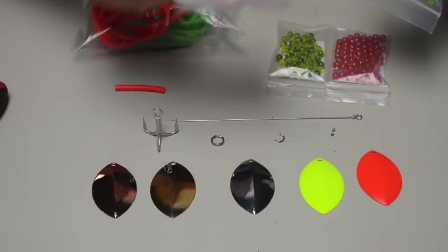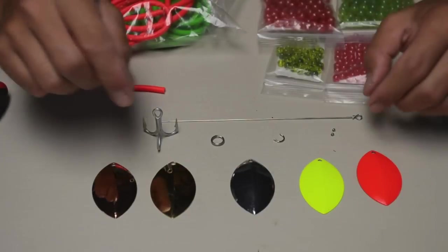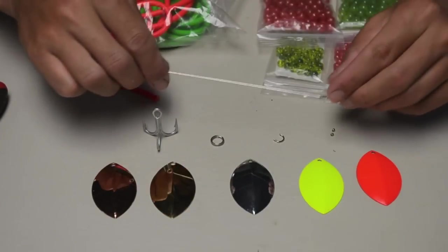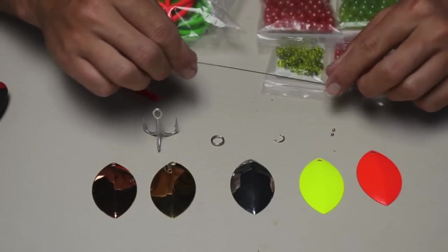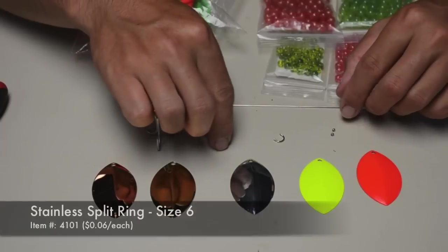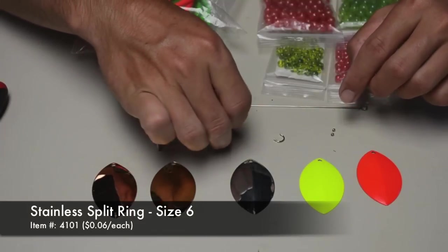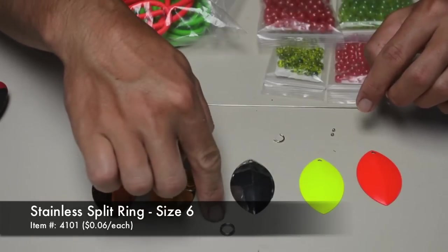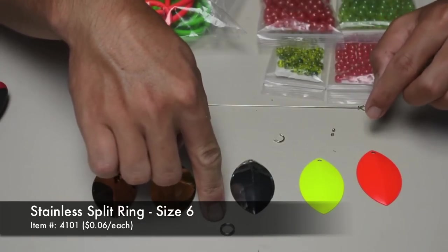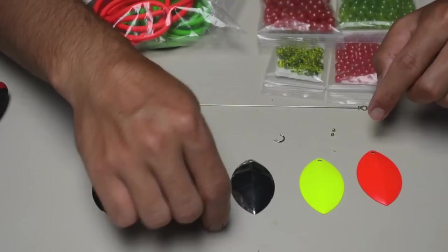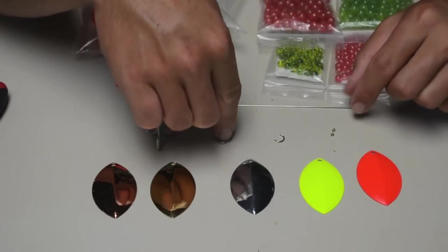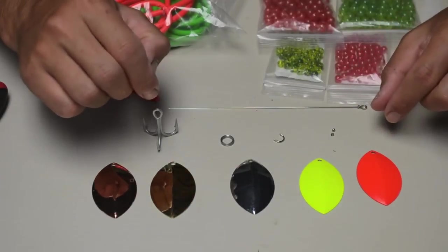The next component, which attaches to the bottom on that preformed loop on your wire shaft, is a size 6 stainless steel split ring that's good to 80 pounds. That should be good enough for most of the salmon steelhead that you're going to catch in the northwest.